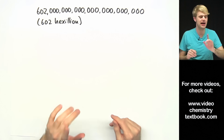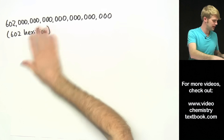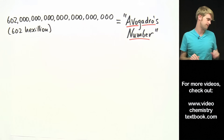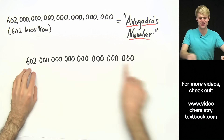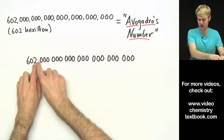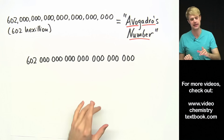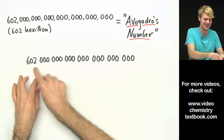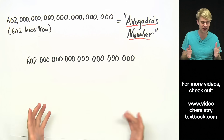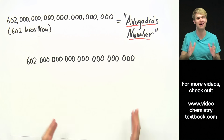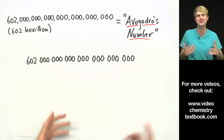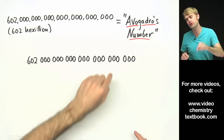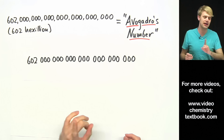Now let's talk about this actual number, 602 hexillion. This number is often referred to as Avogadro's number, in honor of the Italian scientist who discovered it. It's a gigantic number — 602 with 21 zeros after it. Think about what a pain it is to deal with this number. If you're doing math by hand, you have to write this out and do multiplication and division with 21 zeros. Even with a calculator, you have to type in all those zeros and then count how many zeros your answer has. It's a total pain.